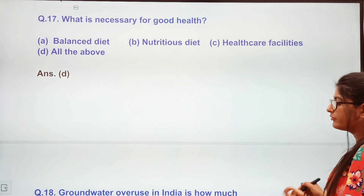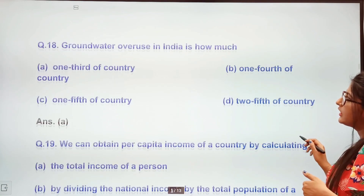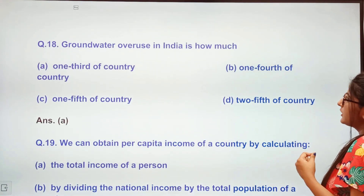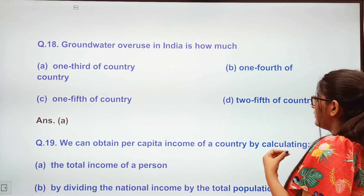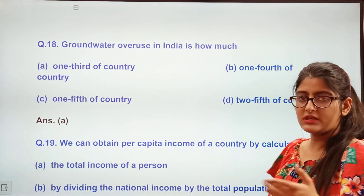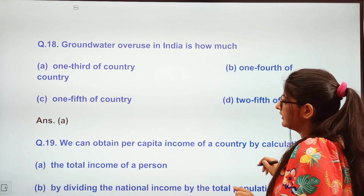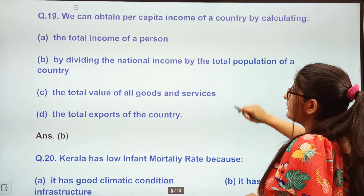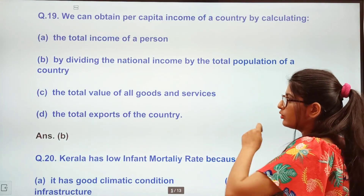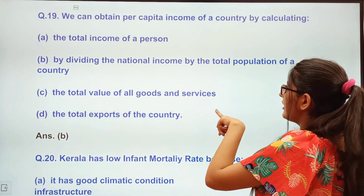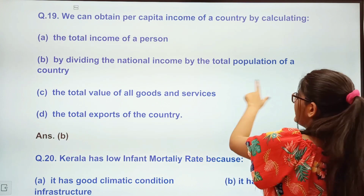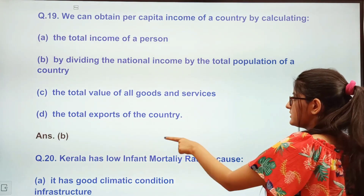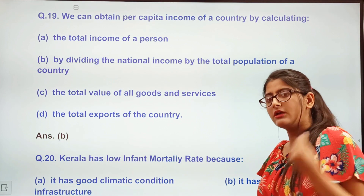For good health, what is needed? Balanced diet, nutritious diet, healthcare facilities — all of the above. Next question: Groundwater resources in India is how much — one third of the country, one fourth, one fifth, or two fifth? The answer is one third of the country. We can obtain per capita income of a country by dividing national income by total population of a country.